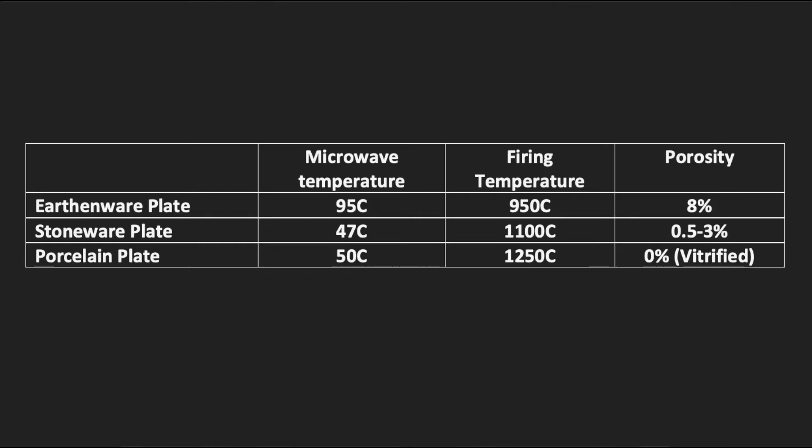What this means for you, the customer, is that if you use an earthenware plate to heat your food, it takes much longer to heat your food because you're heating the water in the plate as much as you're heating the food. Whereas with a stoneware or porcelain plate, you're heating the food and not the plate.